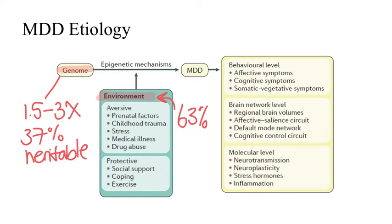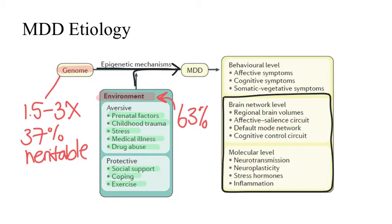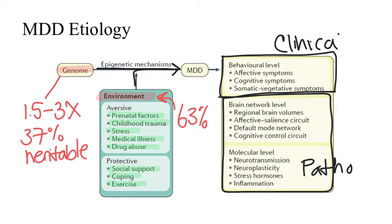The remaining 63% of disease variability is due to individual environment and experiences, including both aversive and protective factors. Aversive factors include prenatal influences, childhood trauma, stress, medical illness, and drug abuse. Protective factors include social support, coping, and exercise. Together, genes and the environment interact to lead to the expression of MDD at the behavioral level, brain network level, and the molecular level — all of which we will address in this video.